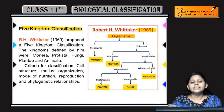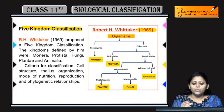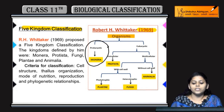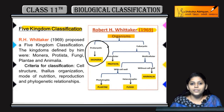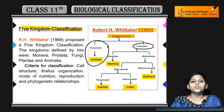It was given by R.H. Whittaker in 1969. He gave five kingdoms: Monera, Protista, Fungi, Plantae, and Animalia. Monera mein aate hain prokaryotic organisms jinke paas organelles nahin hain — inme aate hain bacteria, archaebacteria. Eukaryotic organisms ko unhone differentiate kiya into unicellular and multicellular organisms.